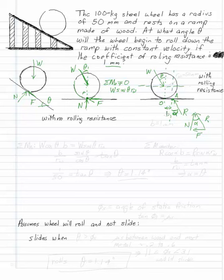b is given in the problem. This is the coefficient of rolling resistance, this is 1 mm. And the radius of your wheel is also given as 50 mm. So this is what I get with rolling resistance.